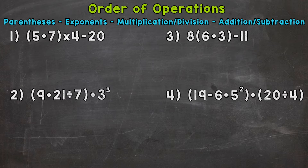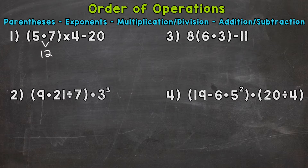Let's go through our process here and start with: are there any parentheses? Yes. So that's where we start with the 5 plus 7 in the parentheses. 5 plus 7 is 12. I suggest doing one step at a time and breaking these problems down until you get to the final answer. So we have 12 — let's bring everything else down that we did not use: the times 4 and the minus 20. Now we have multiplication and subtraction. Any parentheses? No. Any exponents? No. Any multiplication or division? Yes. So that's what we do next. 12 times 4 is 48.